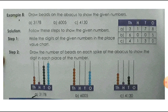For 4130: in the thousands spike draw four beads, in the hundreds spike draw one bead, in the tens spike draw three beads, and in the ones spike it is zero so nothing is drawn — leave that place empty. So four thousand, one hundred and thirty is shown on the abacus.